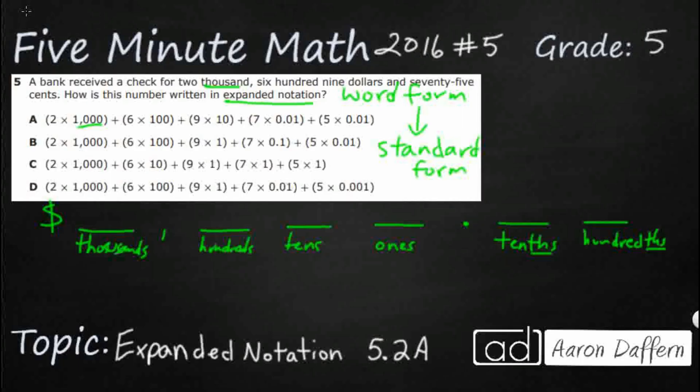And so what we would do is if we wanted to, we can put our number here. So we've got 2,000. All right, so that's pretty easy right there. 600. All right, so we can do 6 in the hundreds spot. If you lay it out like this, they actually kind of give you the answer right here, 9. So 9, that's kind of a tricky one. It goes in the ones place.